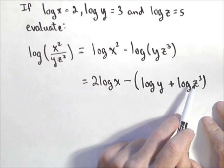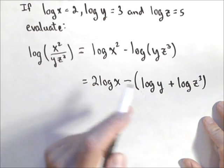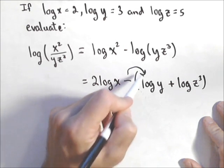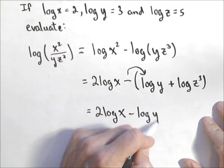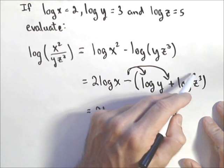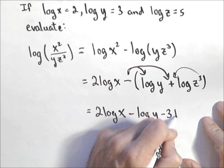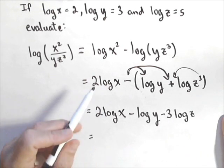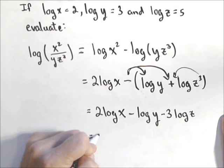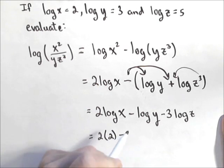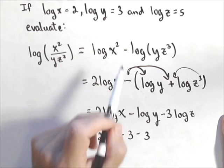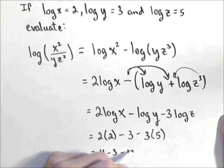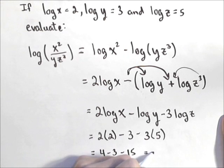Log of x we're good on, log of y we know. We don't know log of z³, but we have a property that allows us to pull the three out front. So I have two log of x. I'm also going to simultaneously distribute this negative, so minus log of y. Now this will be a negative when I pull that three out front, so minus three log of z. So we've expanded it, and the advantage is now that I can put in the values. Log of x was equal to two, so this is two times two, minus log of y, which is three, minus three times five. So we have four minus three minus fifteen, which is negative fourteen.